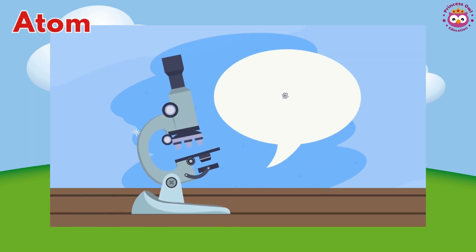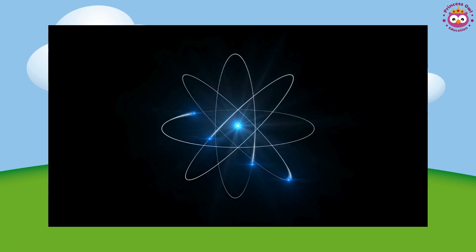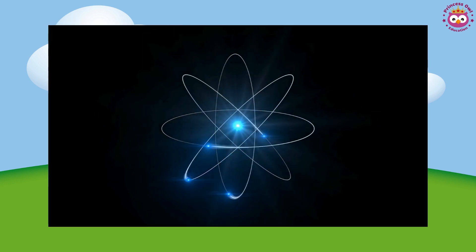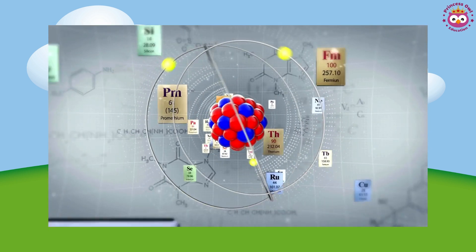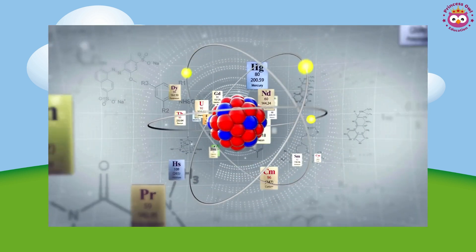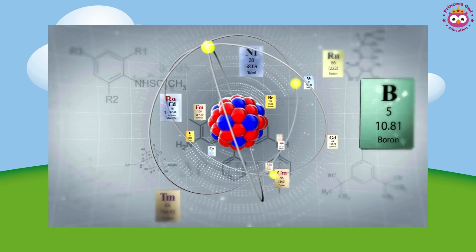An atom is like a tiny building block that makes up everything around us. An atom is the smallest unit of an element, and elements are the basic substances that make up everything we see and touch.